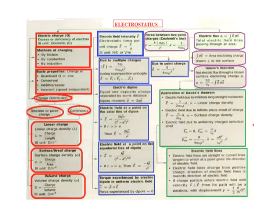So in electrostatics, there are four points. First: electric charge. Next: electric field intensity. Third: force between two point charges. Fourth: electric flux. Let us discuss one by one. First is the electric charge Q. The excess or deficiency of electrons is the electric charge. The SI unit of electric charge is the coulomb, denoted by the letter capital C.